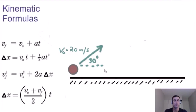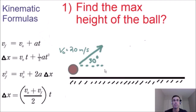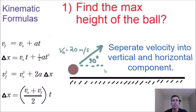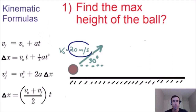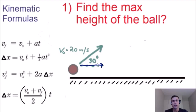For question number one, we need to find the max height of the ball. The first thing I like to do with kinematics in two dimensions is separate each component into a horizontal component and a vertical component. I'm going to do that with this initial velocity of 20 meters per second. The ball is moving to the right — that's velocity in the x direction — and also moving up — that's velocity in the y direction.